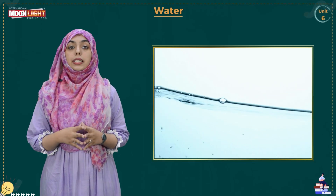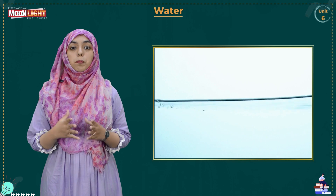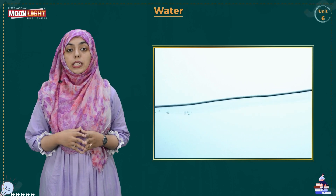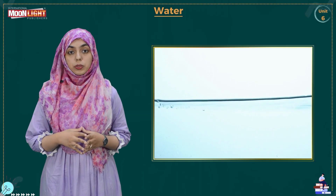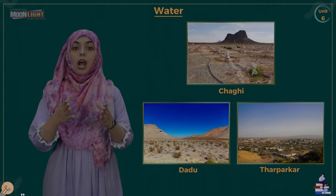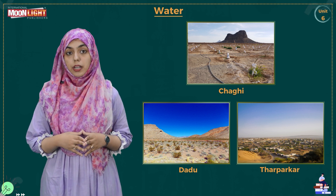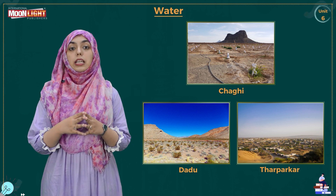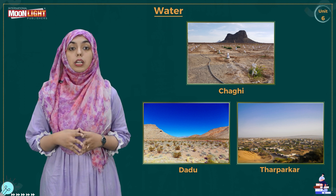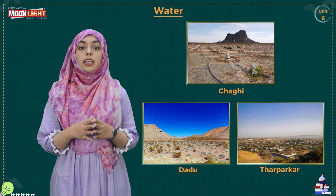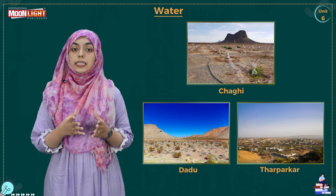Shortage of water. In Pakistan, many people still face a shortage of water because many people waste water. We should save water so that we and future generations are not deprived of it. Areas like Harparkar and Dadu are suffering from shortage of water. People there face great difficulty getting water, and women walk long distances to fetch it. Clean drinking water is not available, and people drink from the same water sources used by animals, causing many diseases. These areas also lack hospitals.